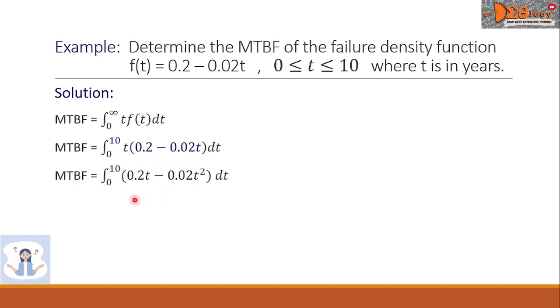Let us simplify first by getting the product of this variable T with the function f of T. So, we have now 0.2 times T minus 0.02 T squared. Now, let us do the integration.